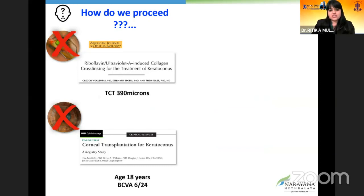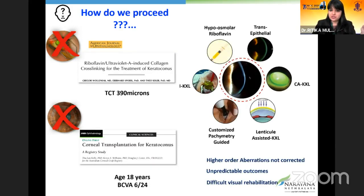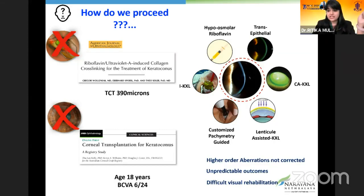Each of these modalities has its own limitations: endothelial toxicity is seen at less than 400 microns in normal collagen crosslinking in thin corneas, and for corneal transplantation, graft survivability is a major issue. Other modalities such as hypoosmolar riboflavin, transepithelial method, contact lens-assisted, lenticule-assisted, customized, pachymetry-guided, and endophoresis all have drawbacks — higher-order aberrations are not corrected and outcomes are unpredictable.